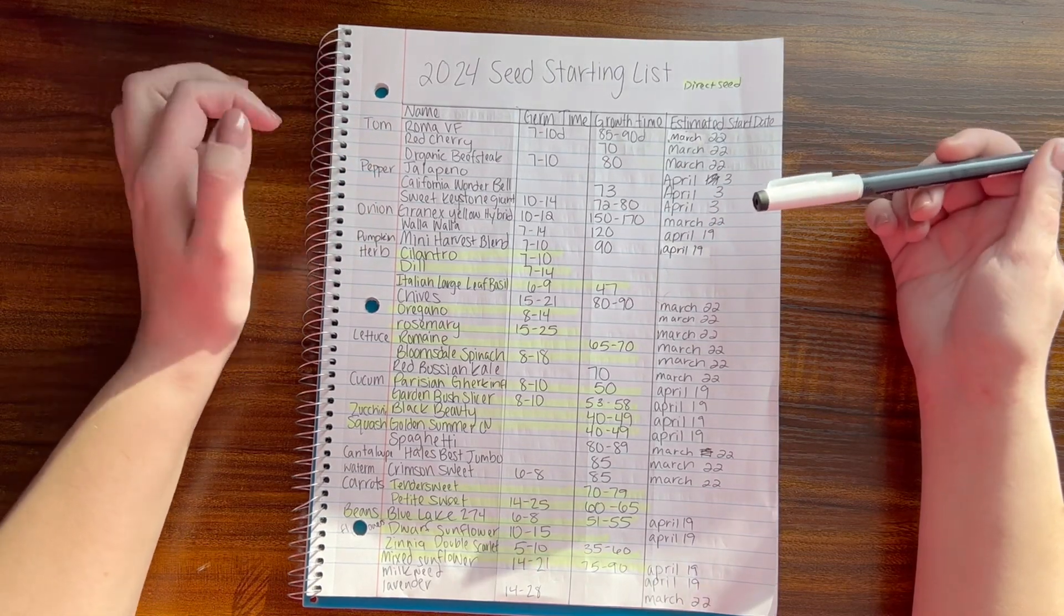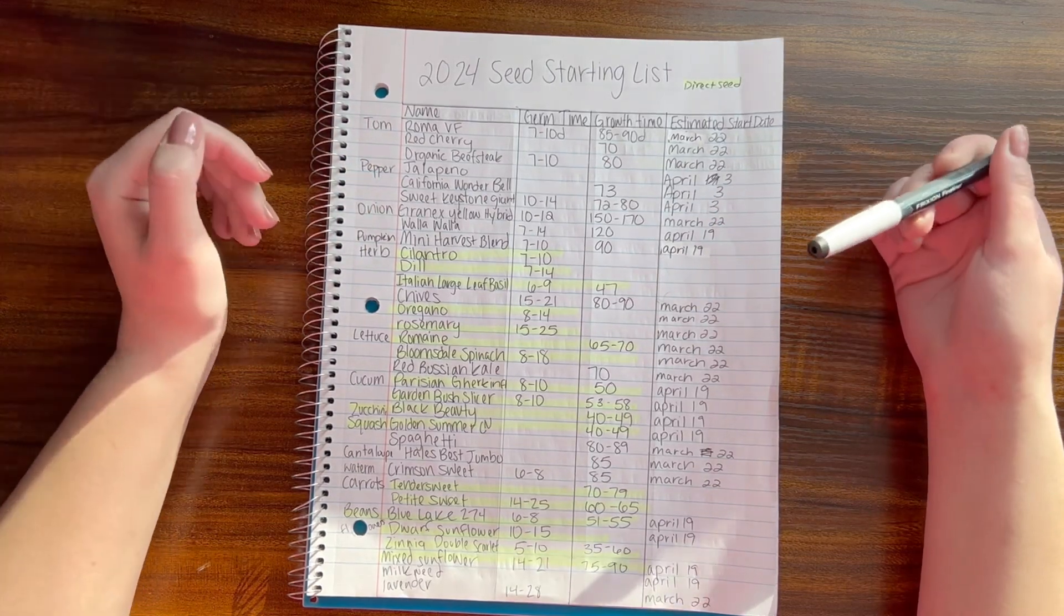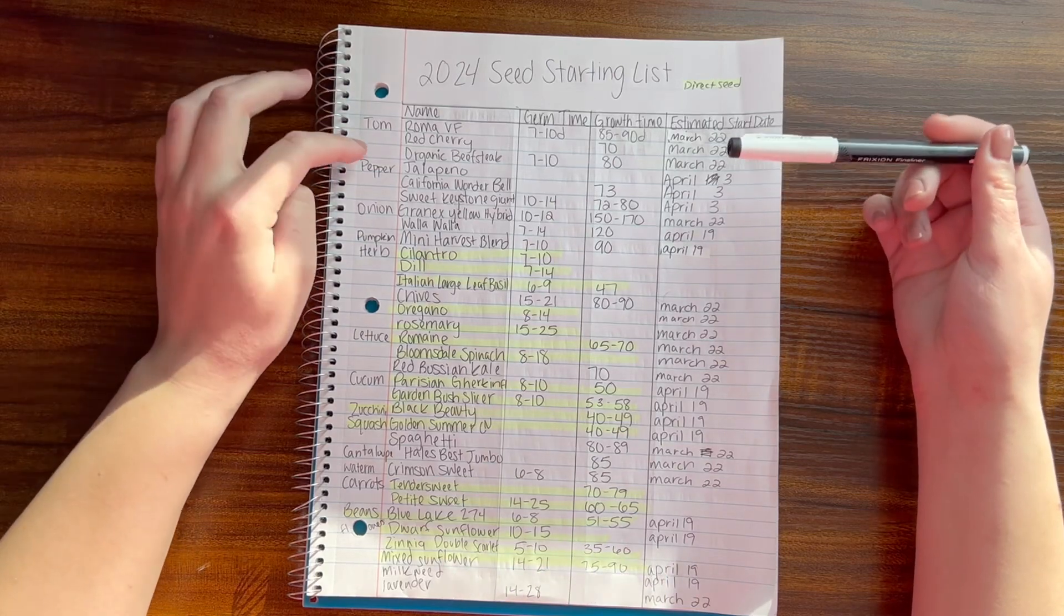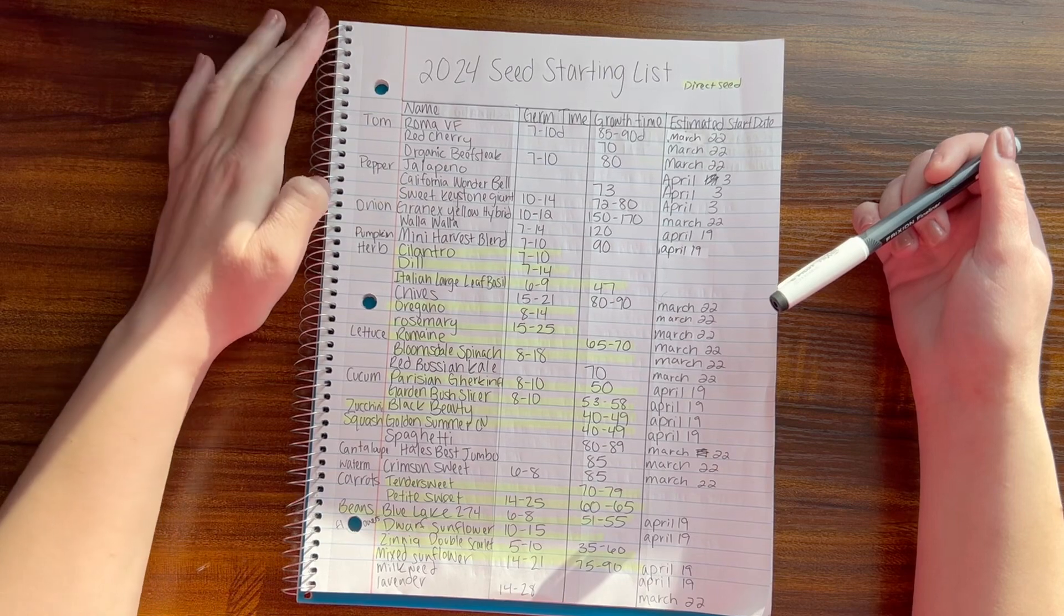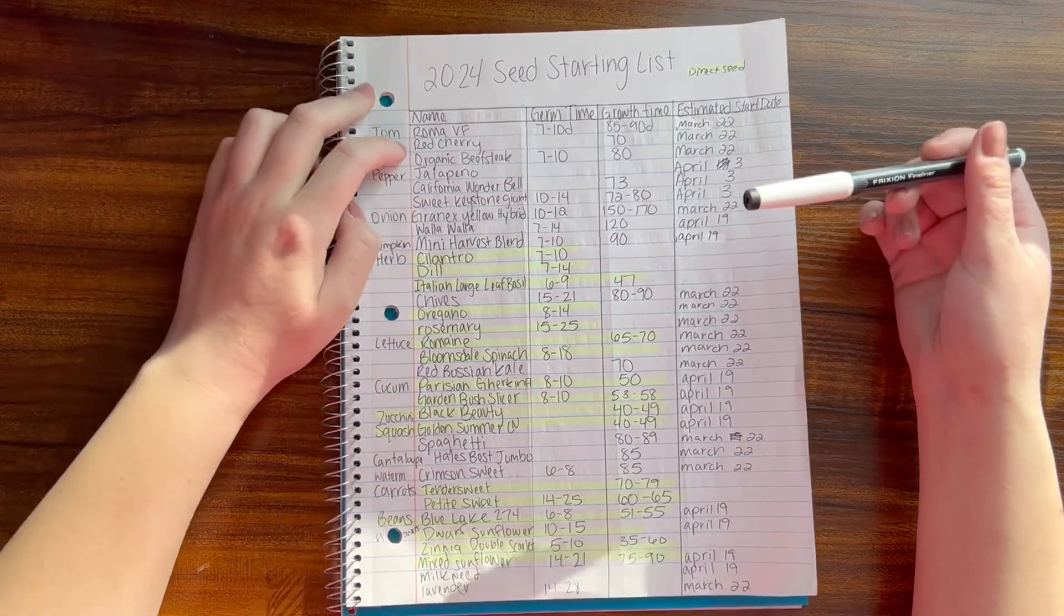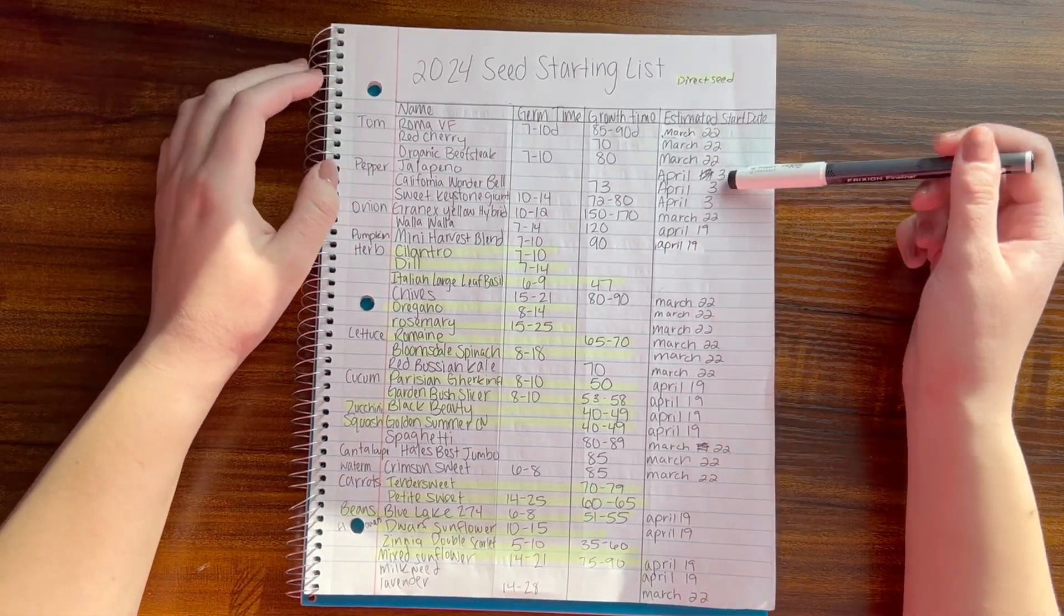And then for peppers, I'm going to do jalapenos, California wonder bell, and then the sweet keystone giant. I'm going to start them a little bit later on the third.